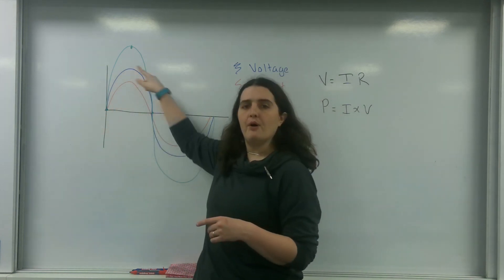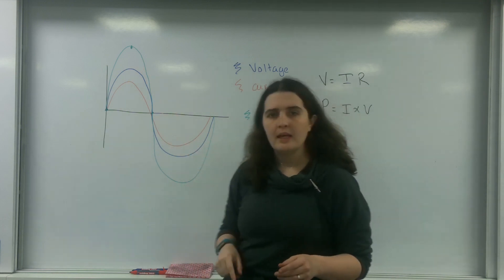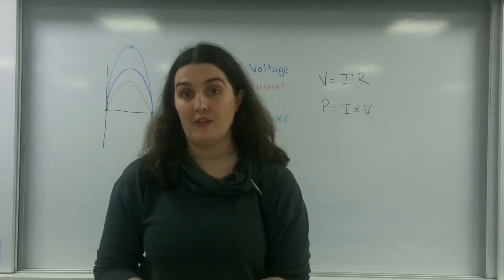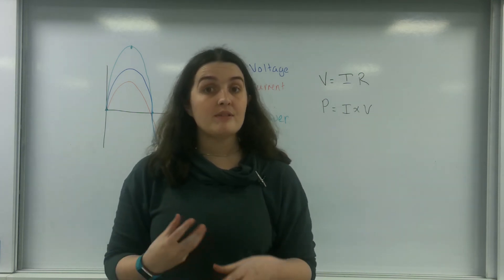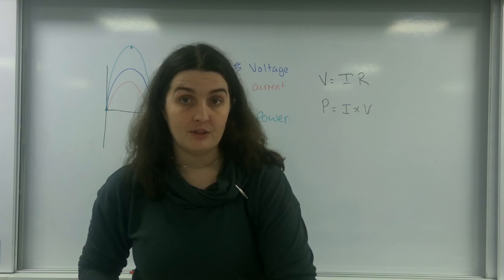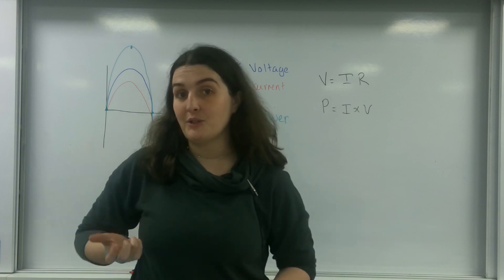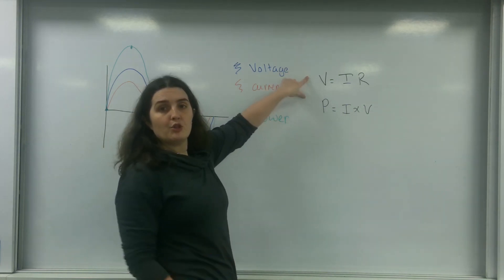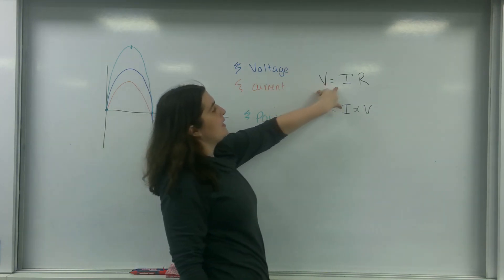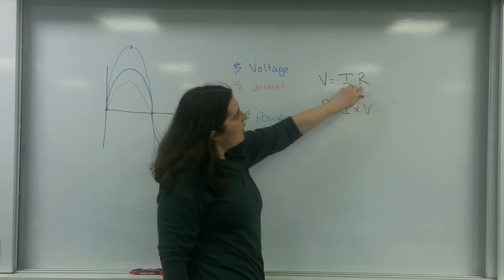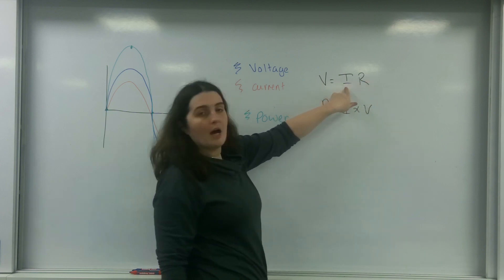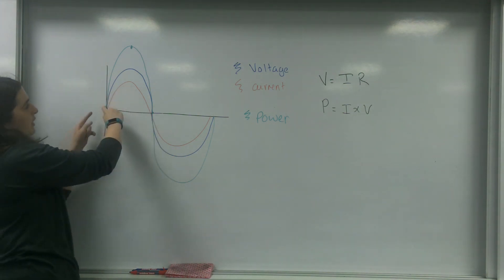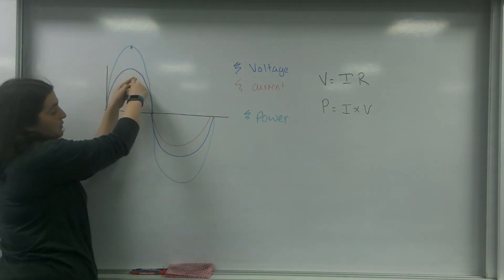The current alternates — it goes from positive to negative. Now, current and potential difference are related to each other. As long as the resistance in the circuit stays constant, if I increase my potential difference, my current has to increase too. That is Ohm's law: V equals IR. So if R remains constant and I goes up, V goes up — you can see that here, as I goes up, my potential difference goes up too.